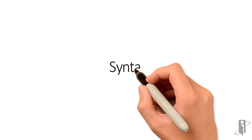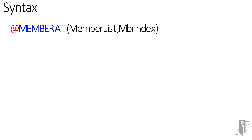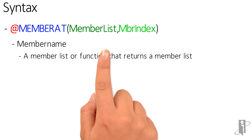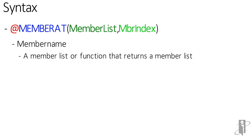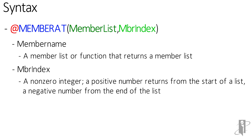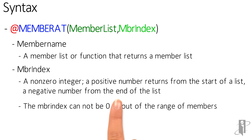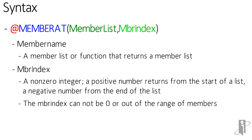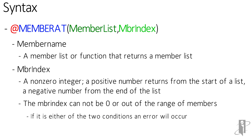So what is the syntax for this? It's Member At, a member list, and a member index. The member list is a member list or a function that returns a member list — not a single member, but a list of members you're going to use for finding what you want. The member index is a non-zero integer. A positive number starts from the beginning of the list; a negative number from the end of the list. The member index cannot be zero and it can't be out of range. So if I have 12 members, I can't use an index of 13. If I do either — zero or out of range — I will get an error.